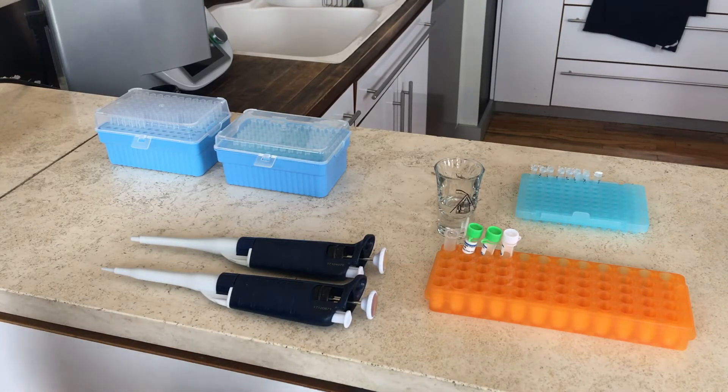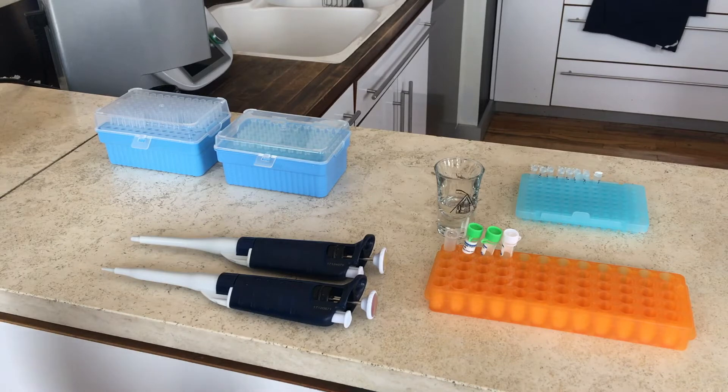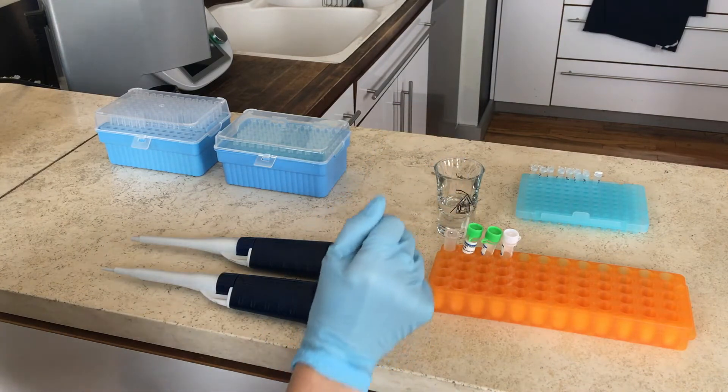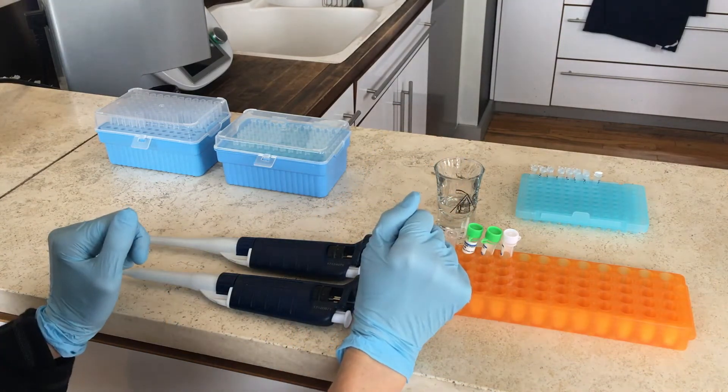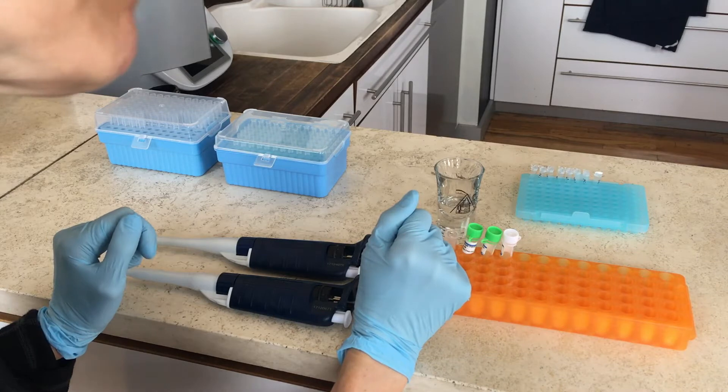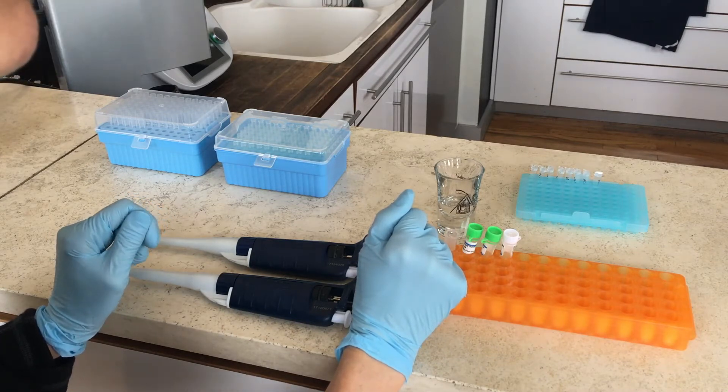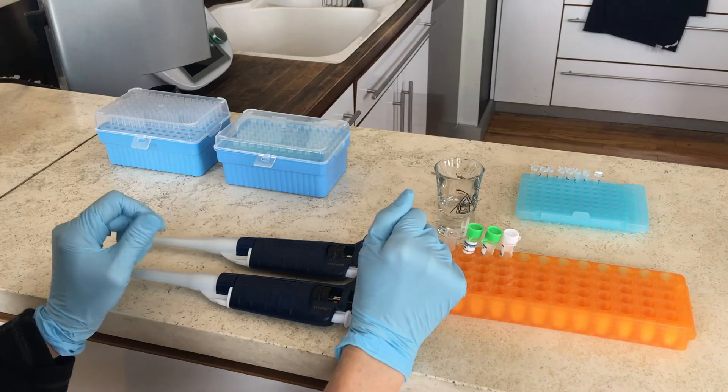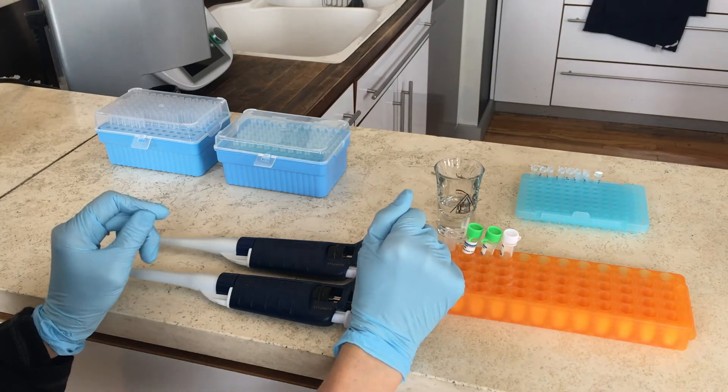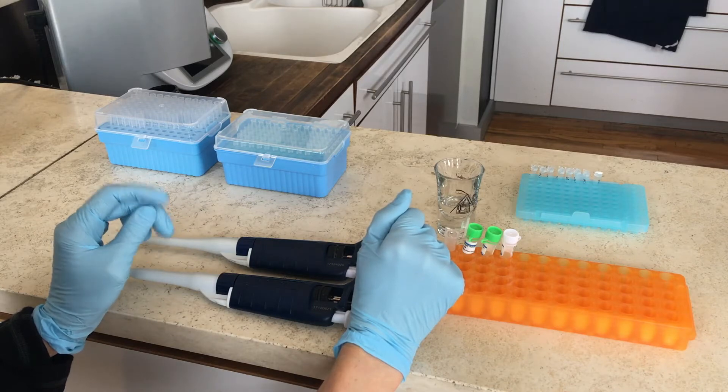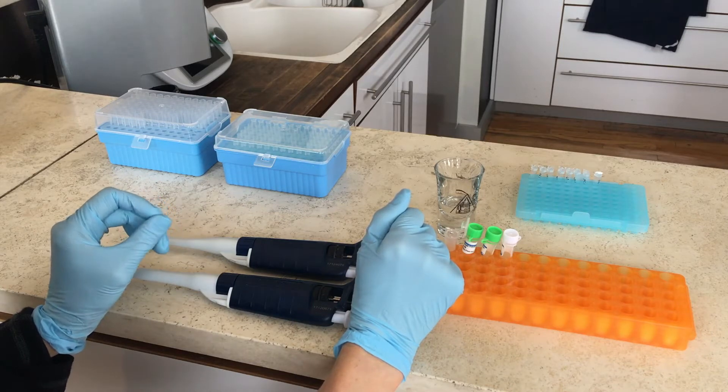So I'm going to put that together. I'm going to measure out about 120 microliters of the PCR master mix, about 5 microliters of the forward primer, 5 microliters of the reverse primer, and then about 100 or so microliters of the distilled water.